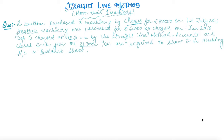Hello friends. Moving towards the next question of the straight line method, we will learn how the treatment of depreciation will be done and how a machinery account will be prepared when there is more than one machinery. In our previous question we discussed just a single machinery, but in this question there are more than one machinery in the hand of the entrepreneur.